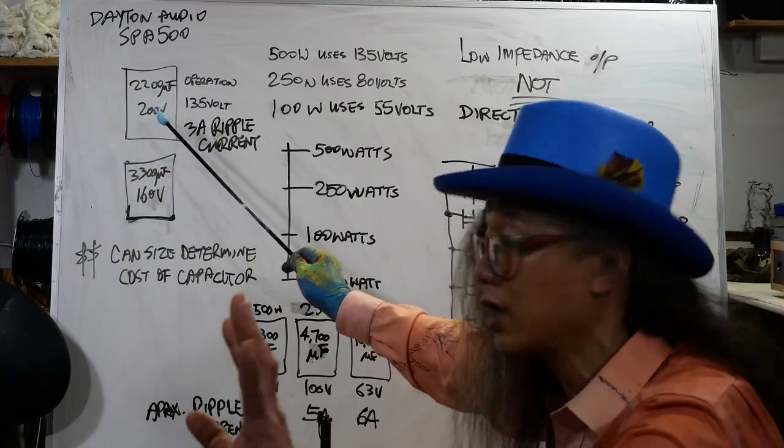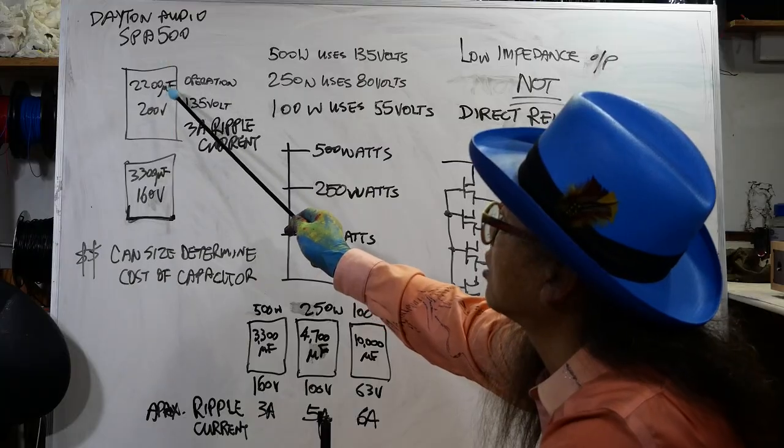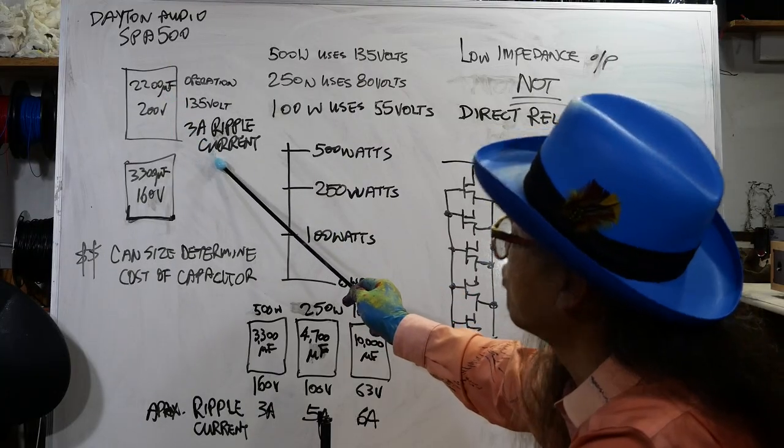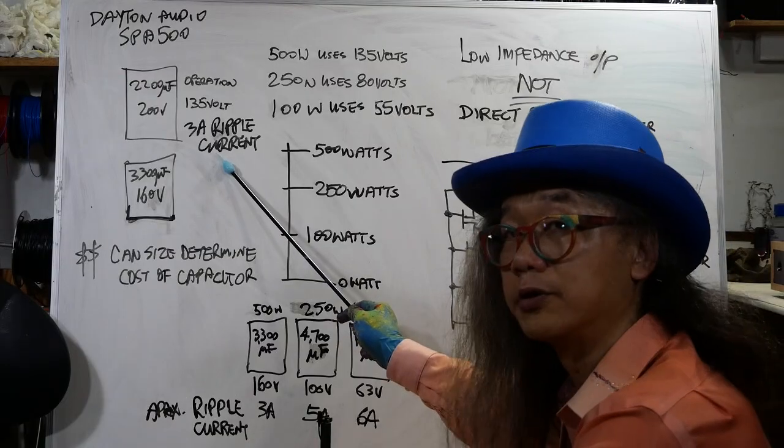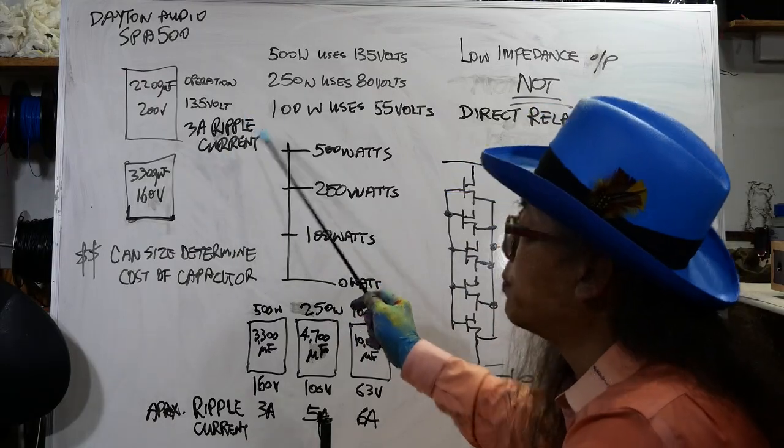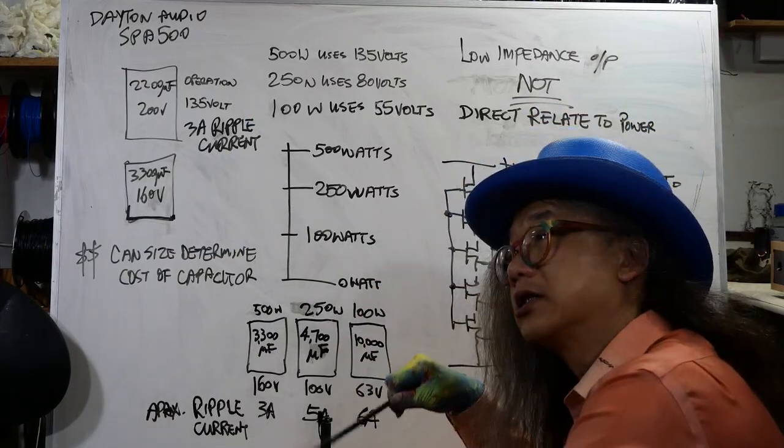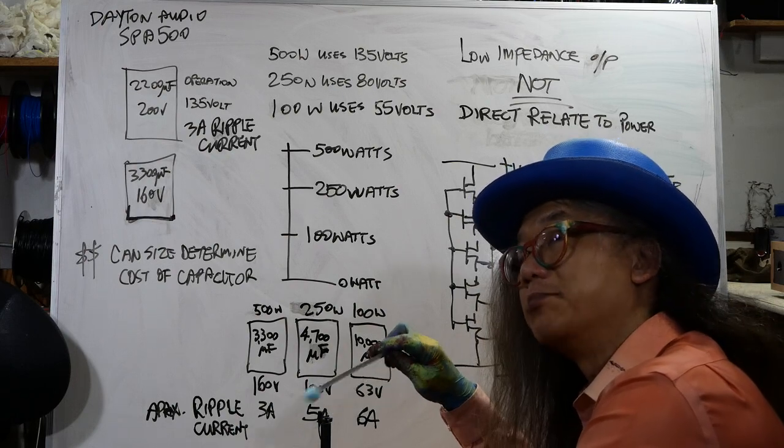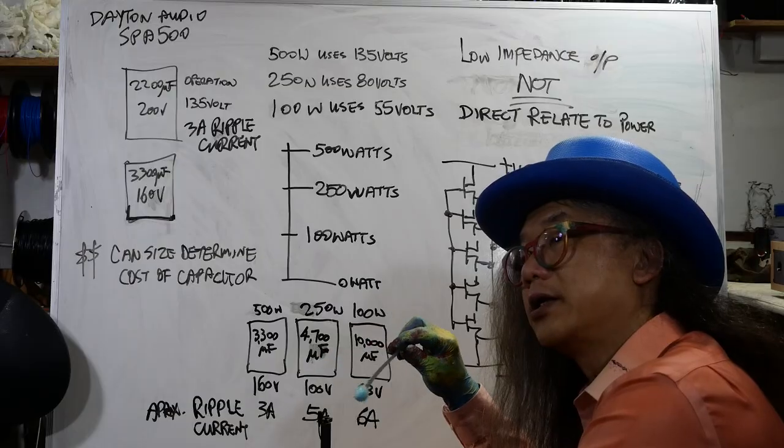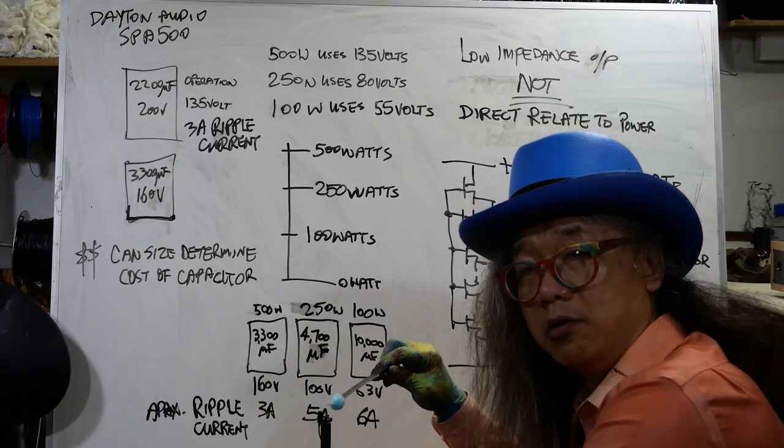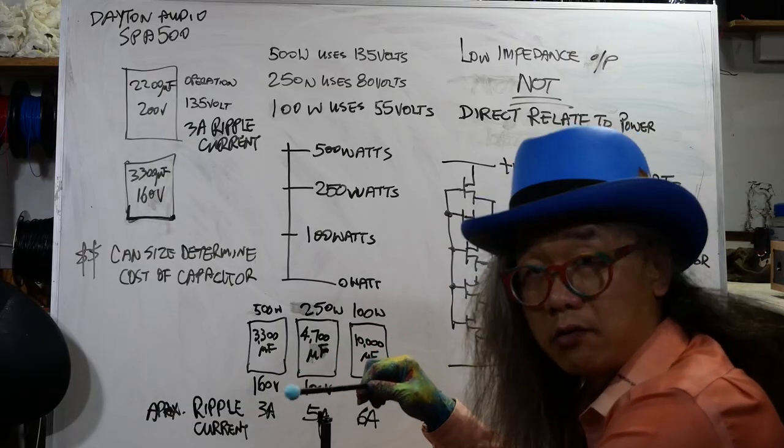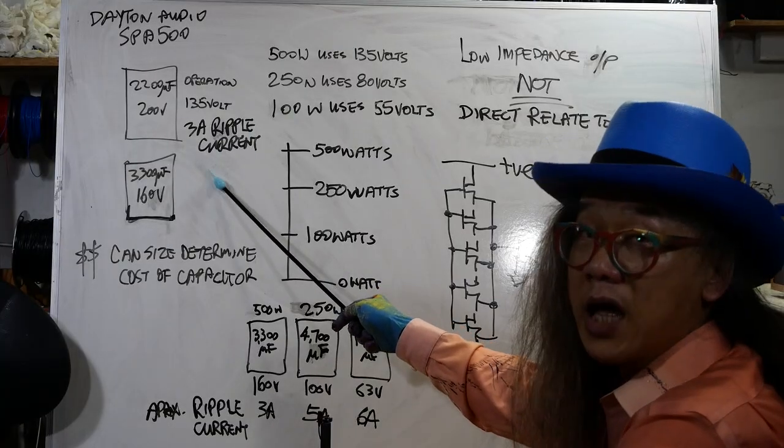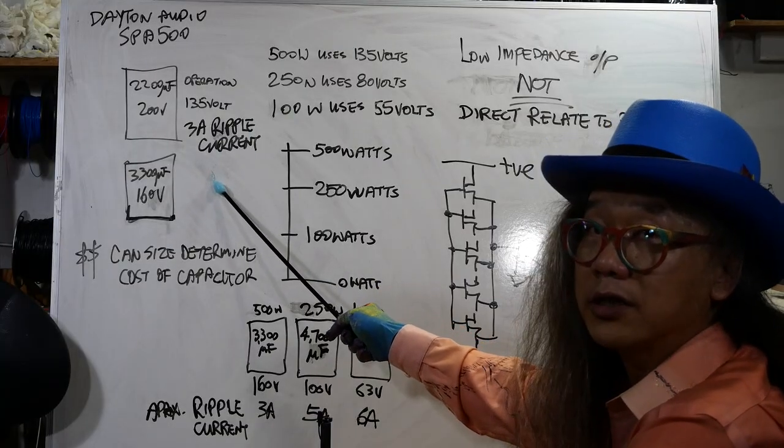A 2200 microfarad cap usually has 3 amp maximum ripple current. Ripple current is the maximum current that the capacitor can handle without destroying itself. So with a 3 amp ripple current maximum rating,